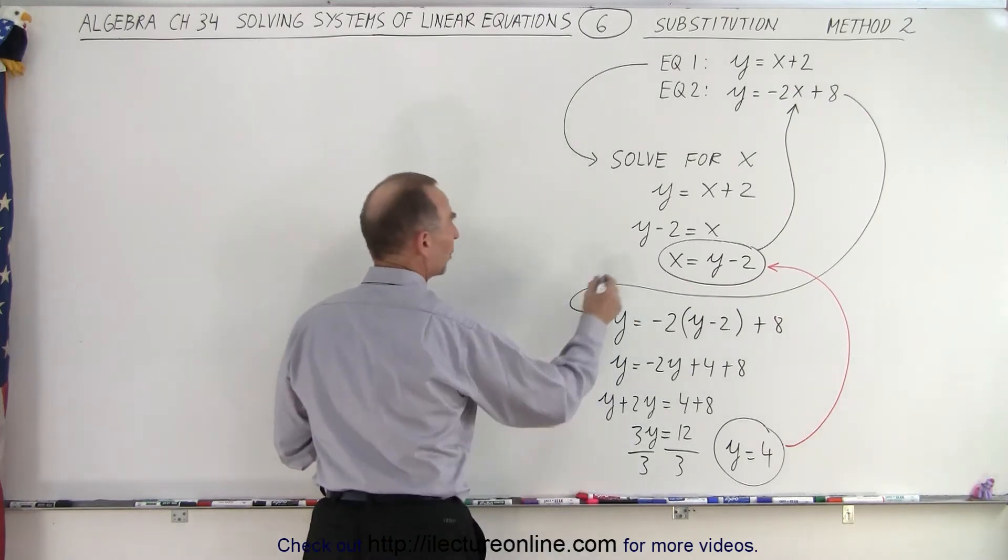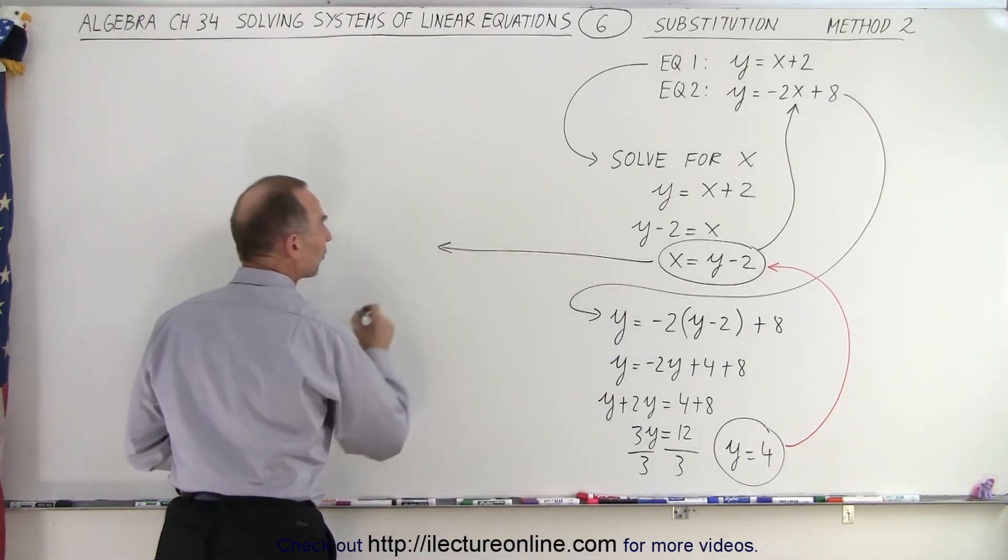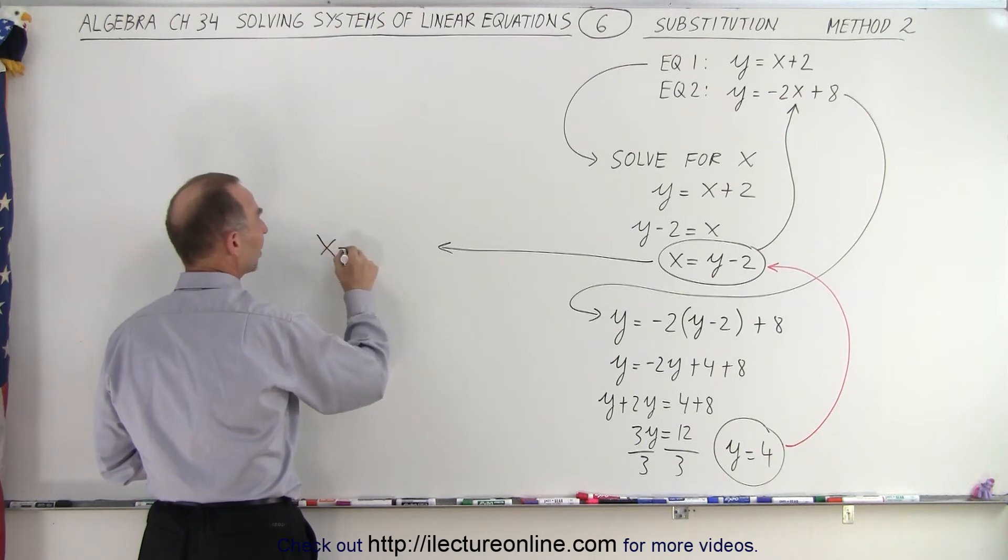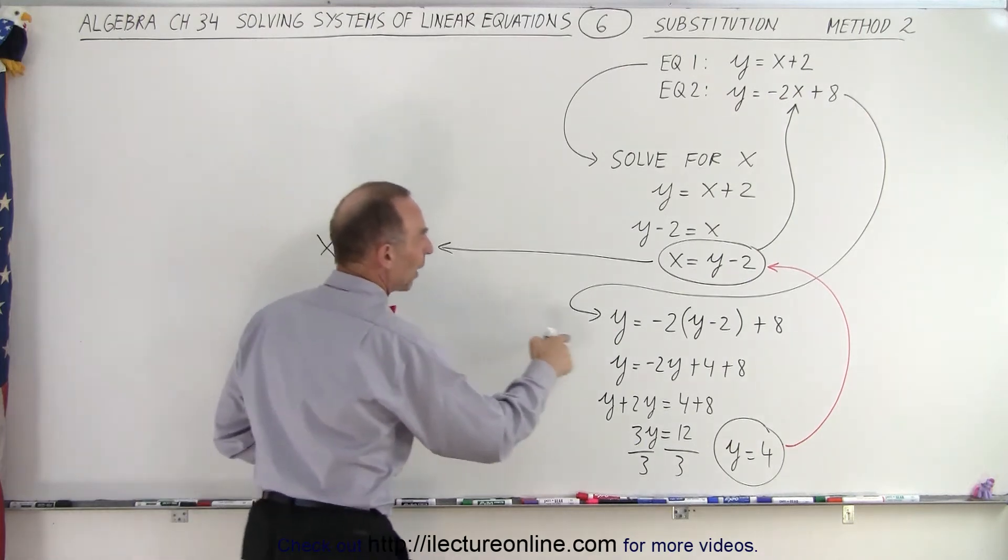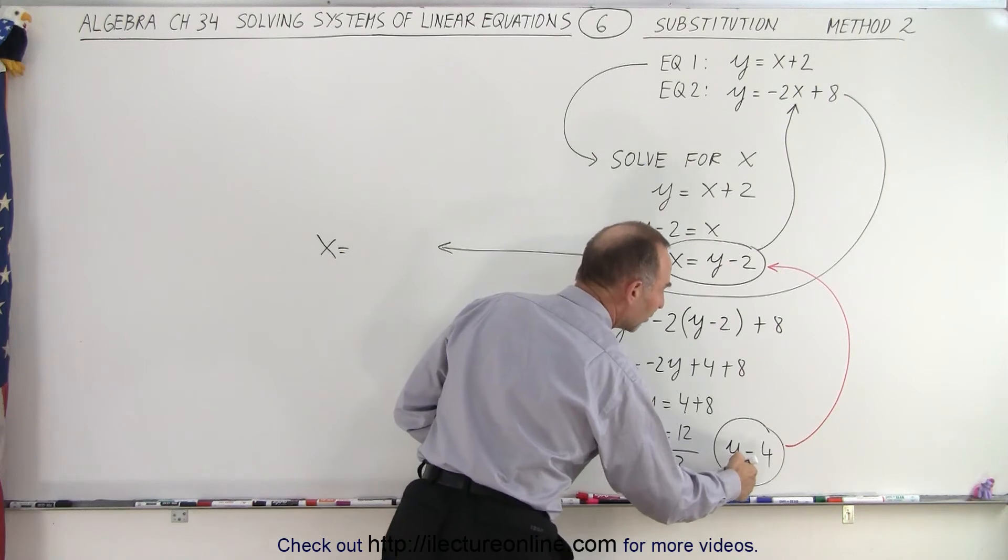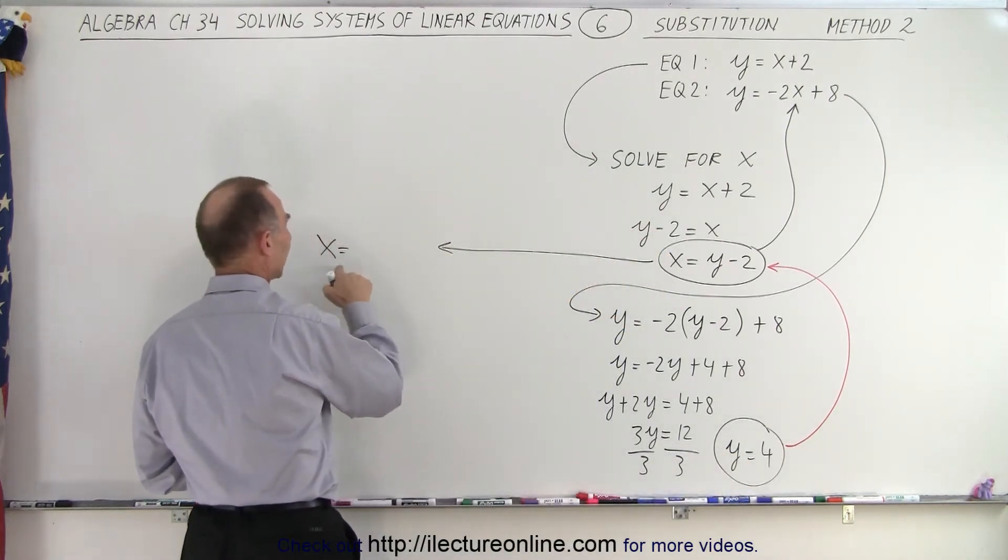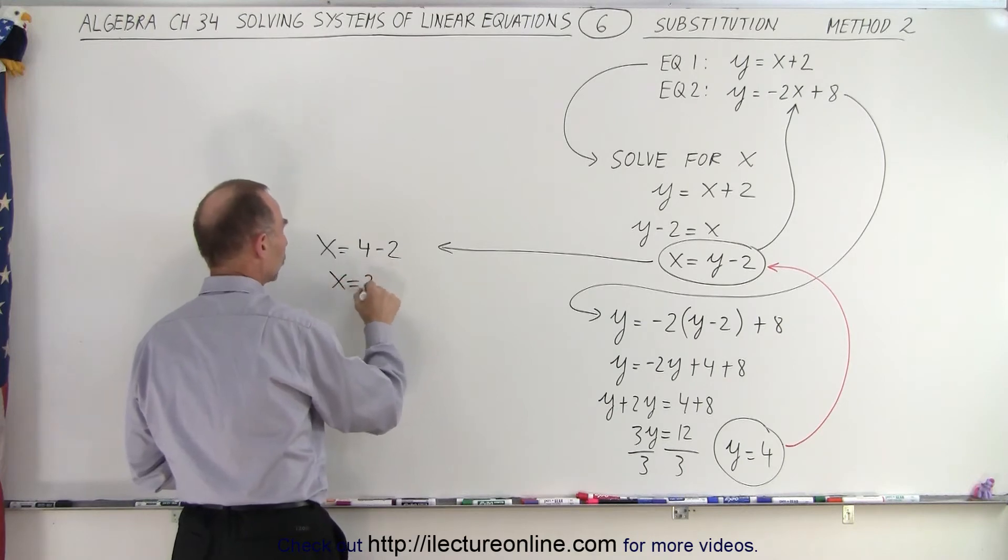So now we take this and go x is equal to, but instead of writing y, we write what y is equal to. y is equal to 4. So here we write x equals 4 minus 2, or x is equal to 2.